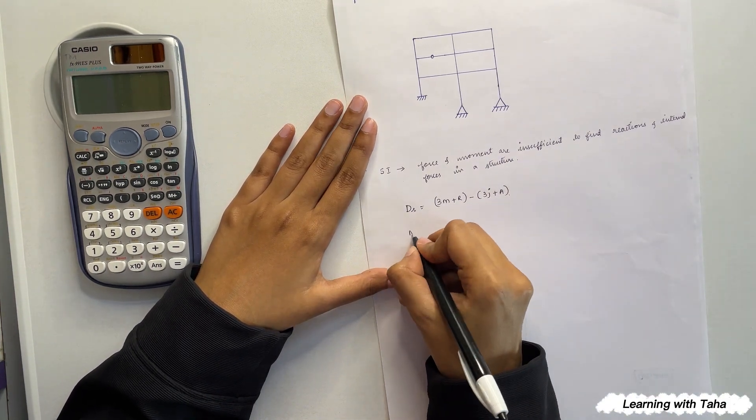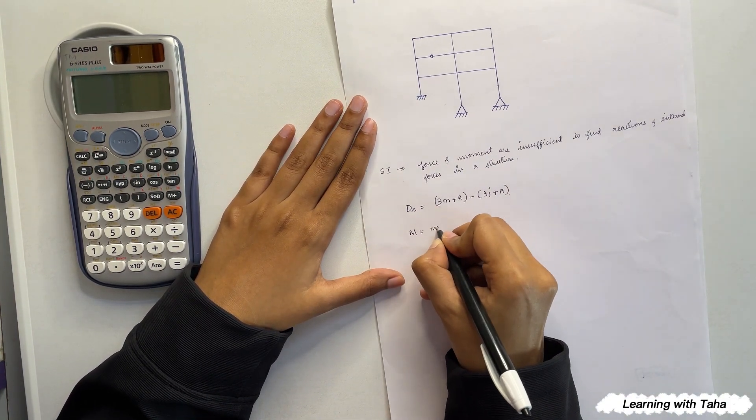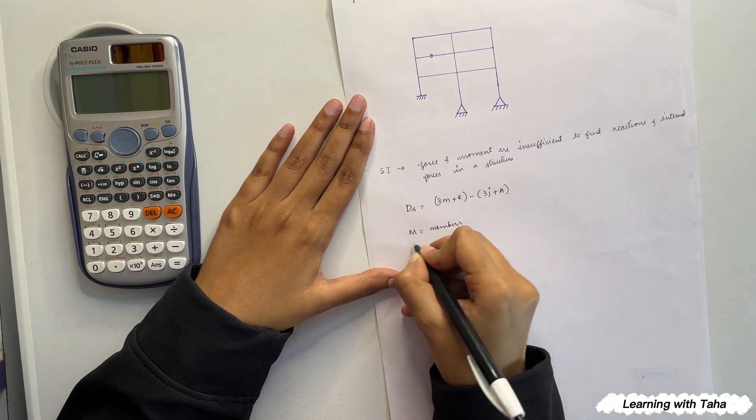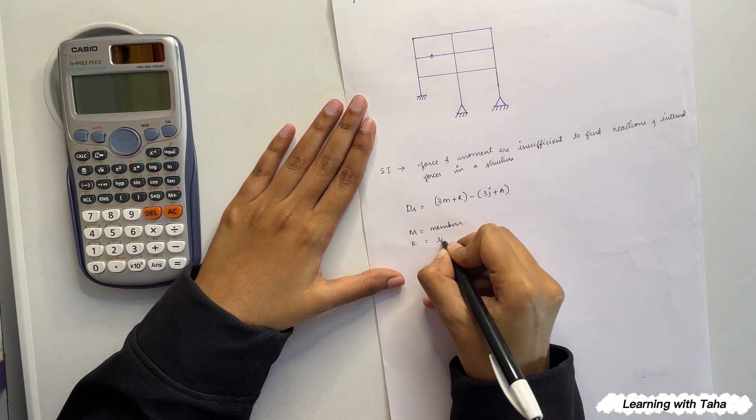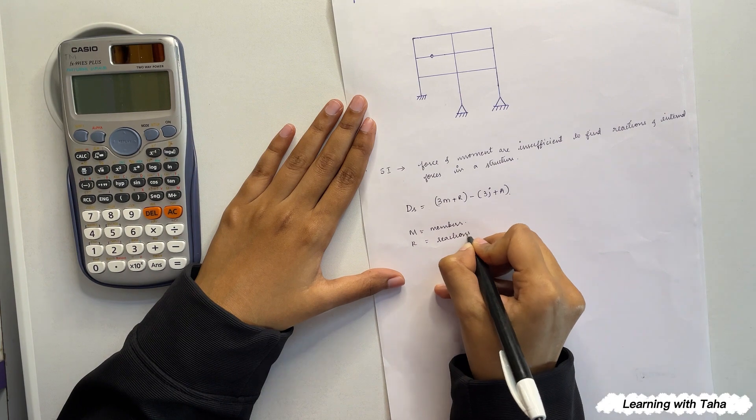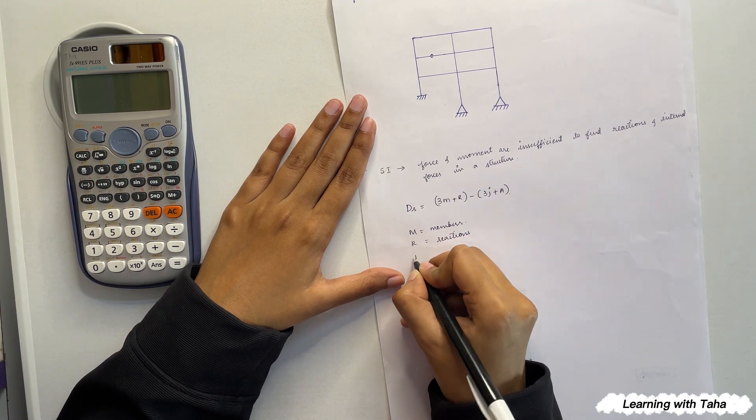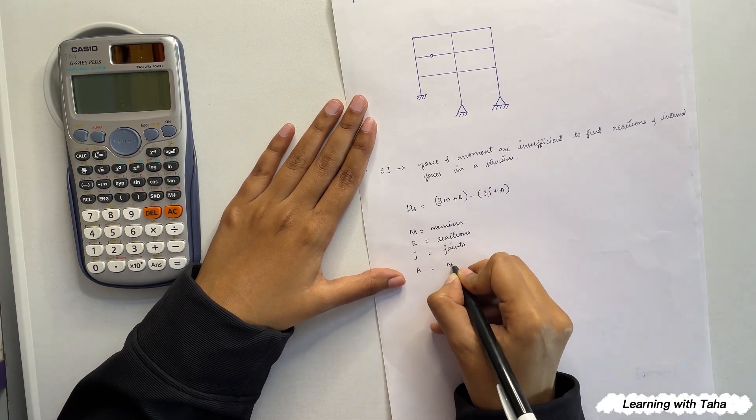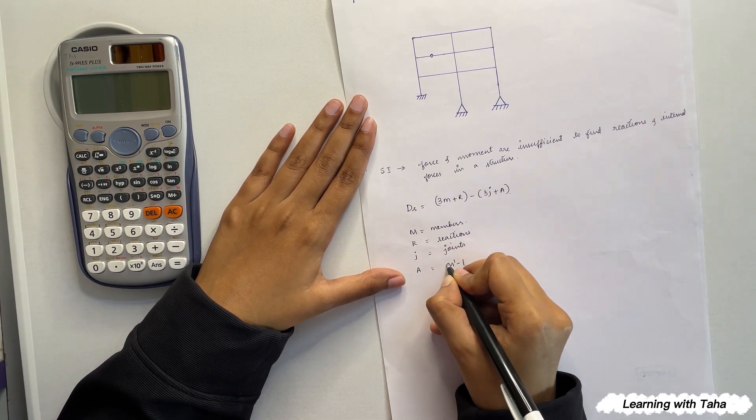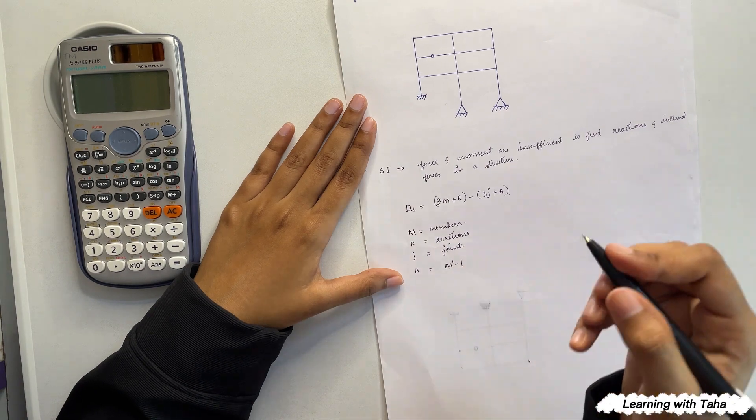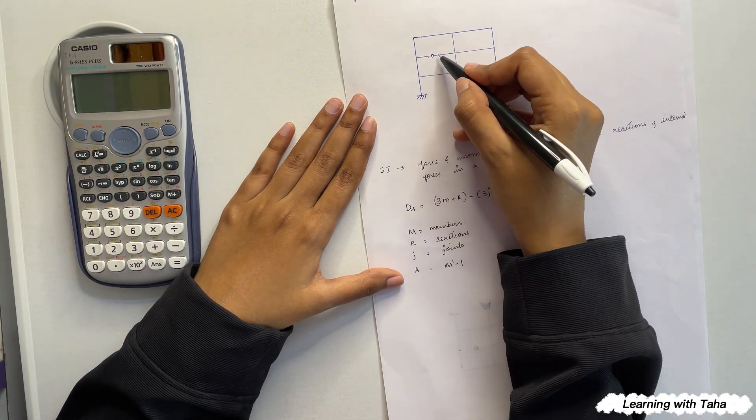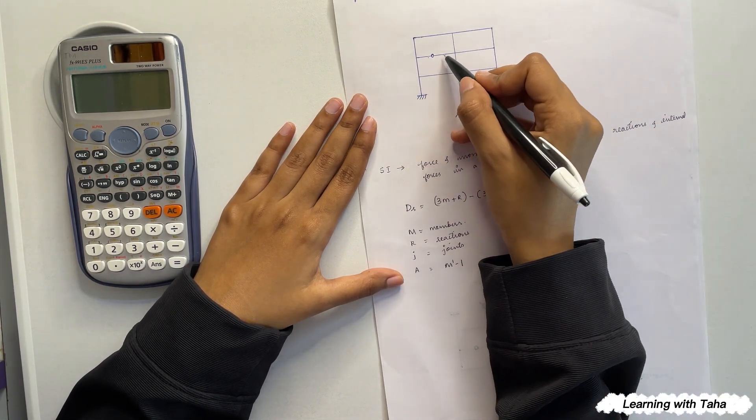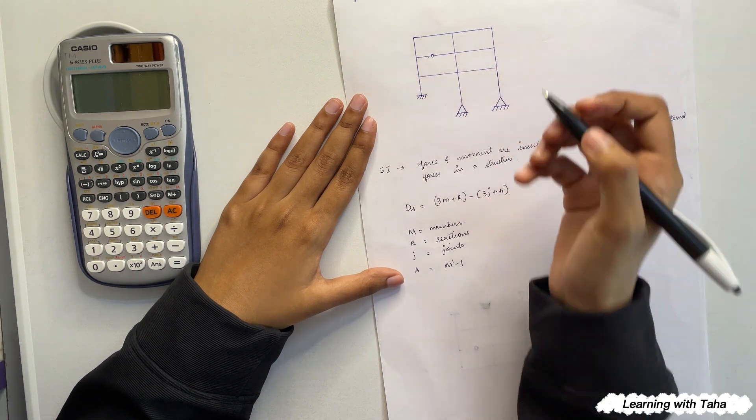Here m is the members in a structure, r is the reactions, j are the joints, and a equals m dash minus one, which is nothing but m dash is the member connecting the hinge. So in this case there are two members which are connecting a single hinge, so here m dash equals two.